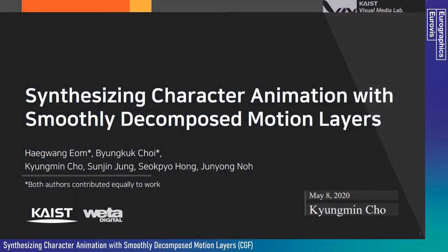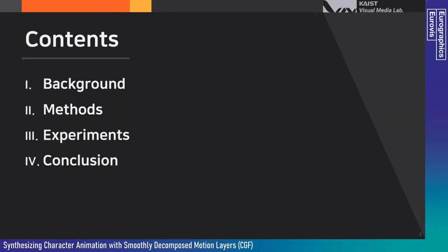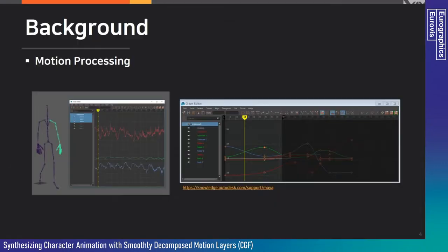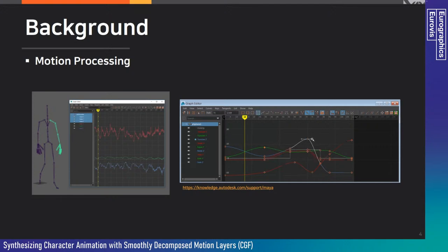Hi, my name is Kyungmin and I will present Synthesizing Character Animation with Smoothly Decomposed Motion Layers. This work was done by Haeghwang and Byungguk when they were at KAIST; both authors are now at UETA. Motion can be viewed as a high-dimensional signal varying over time, and various methods have been developed by generalizing signal processing for problems arising from motion synthesis tasks.